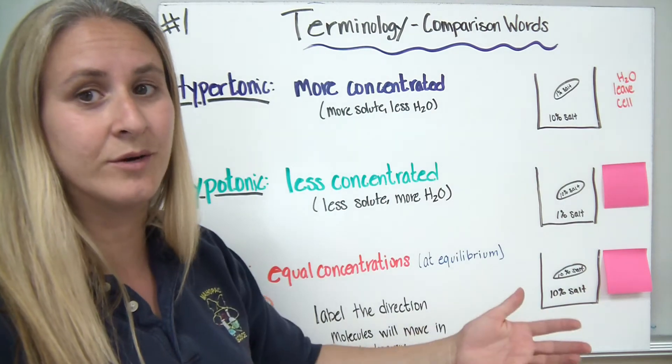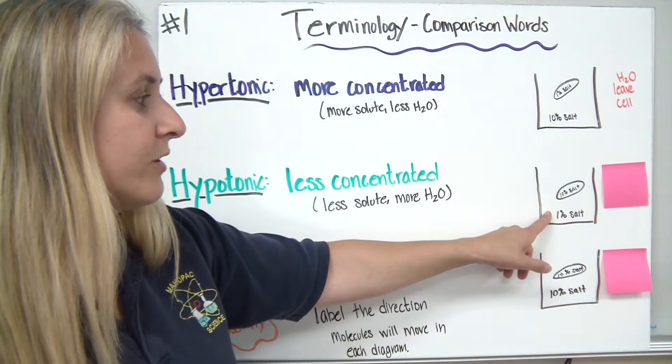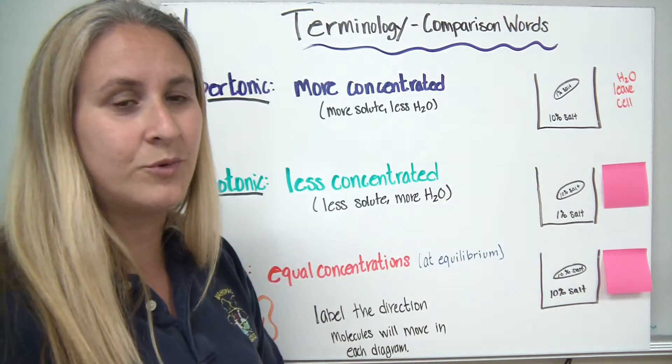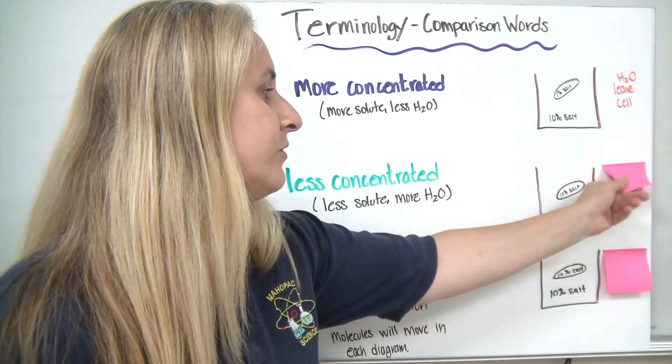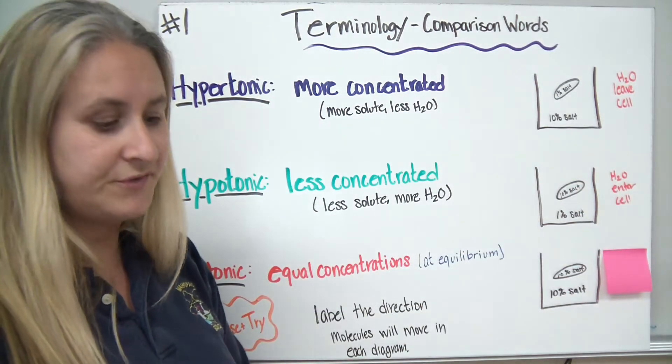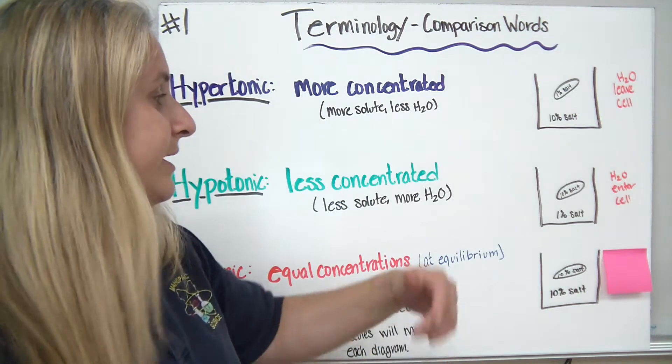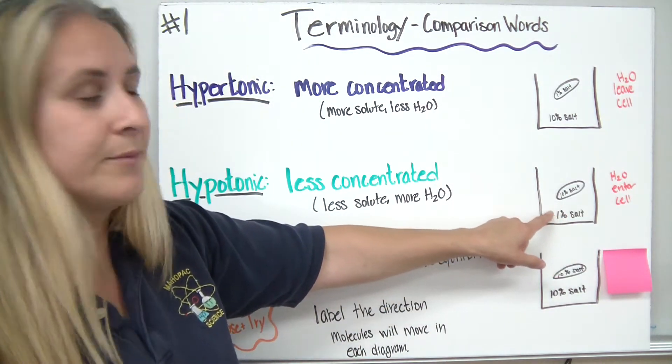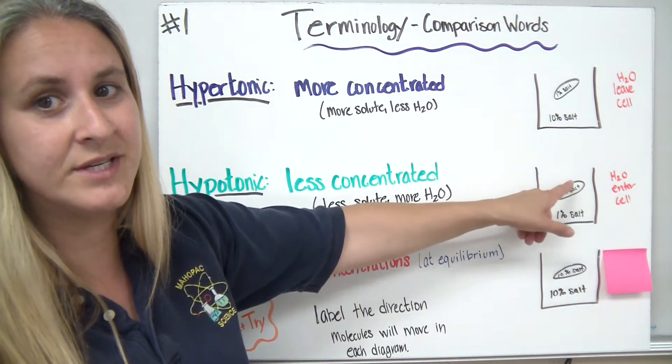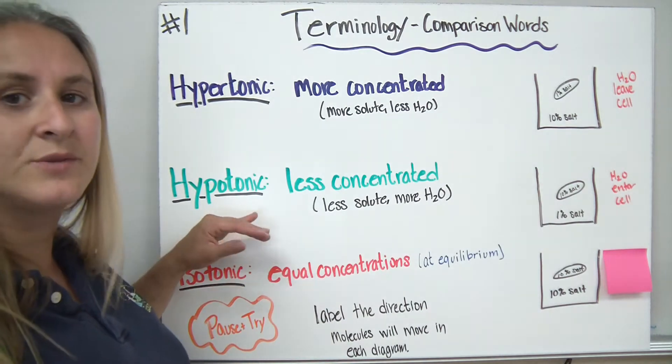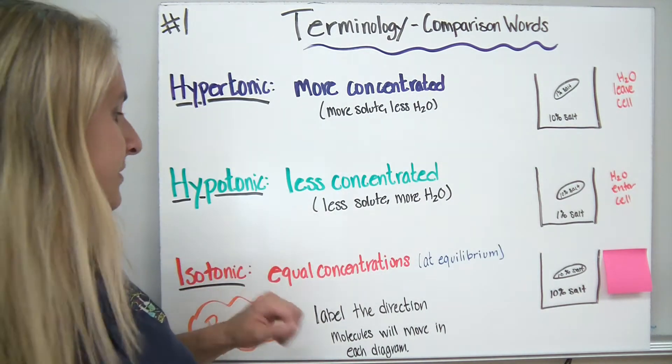Remember to ask yourself, where is there more water? There's more water outside. So which direction would the water move? The water would move into the cell. Well, the water would diffuse into the cell by osmosis because it's going from an area of high, 99%, to an area of low. In this case, we put it into what's called a hypotonic solution.